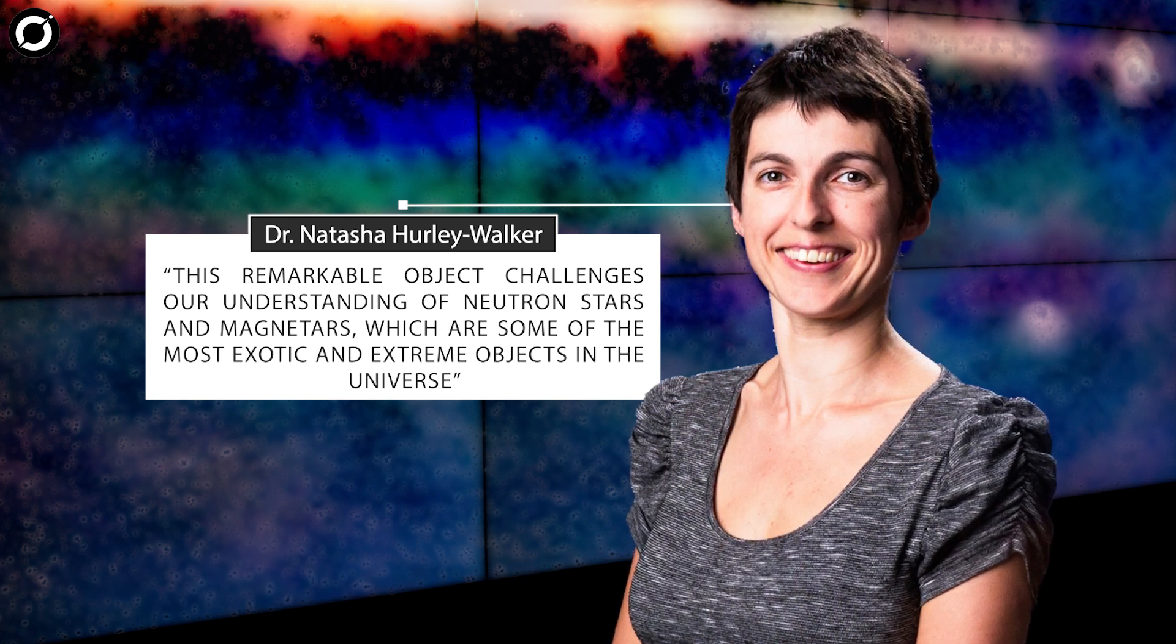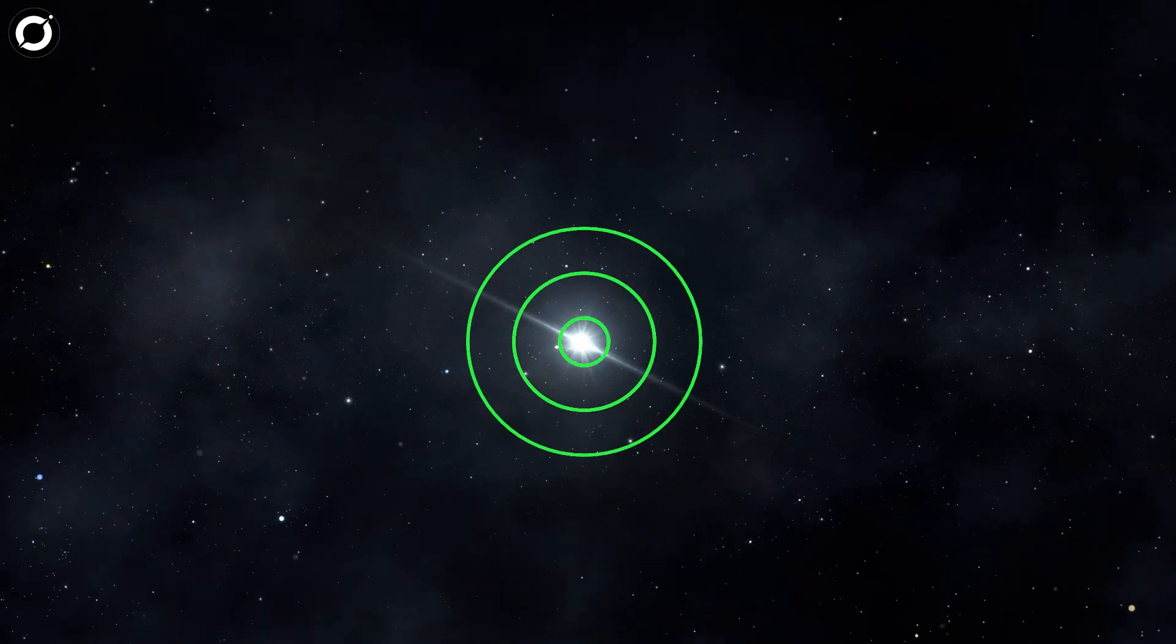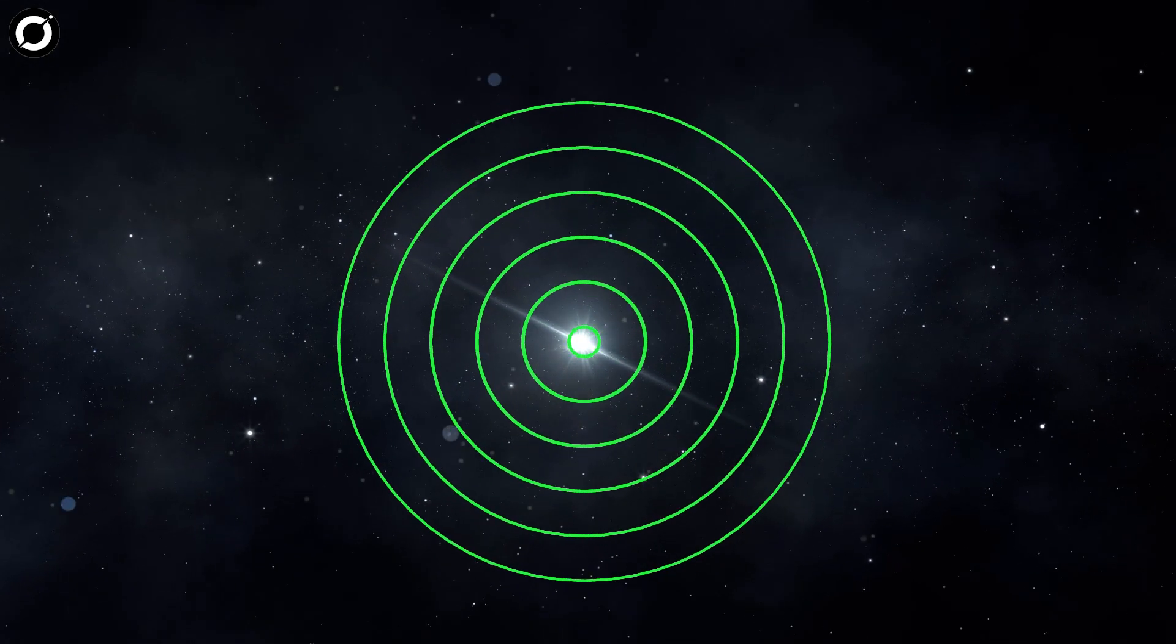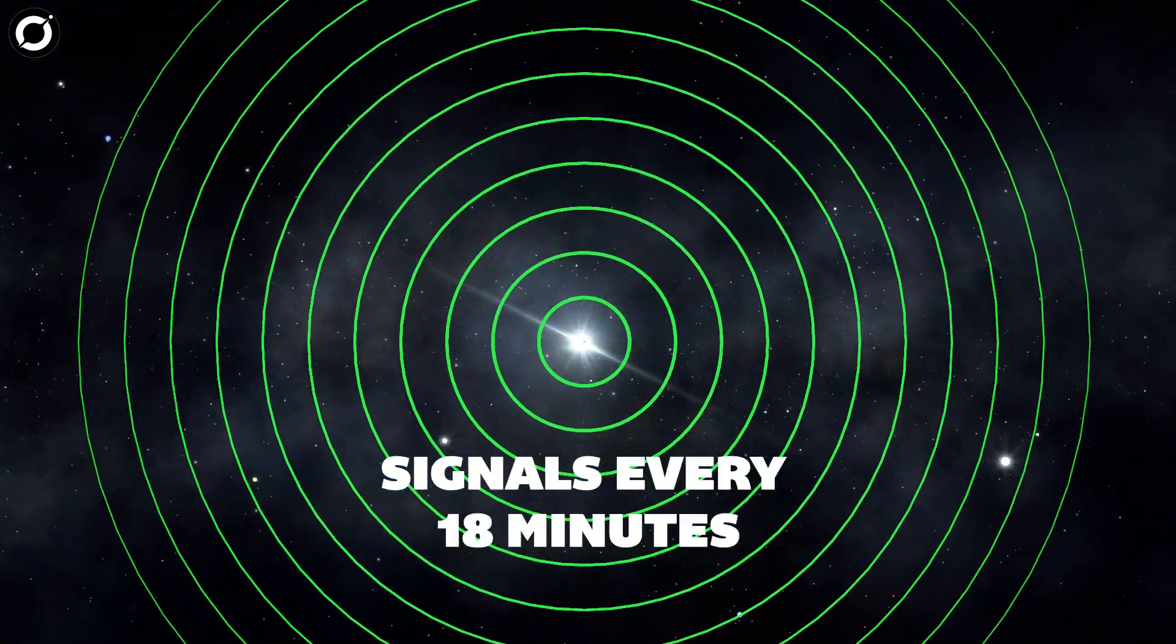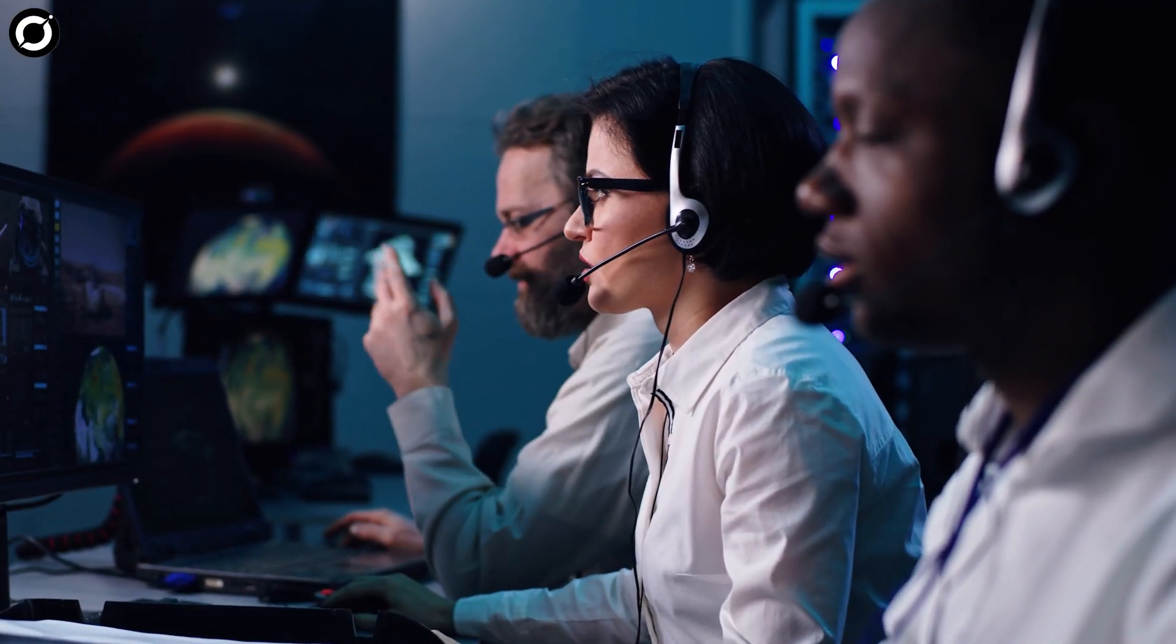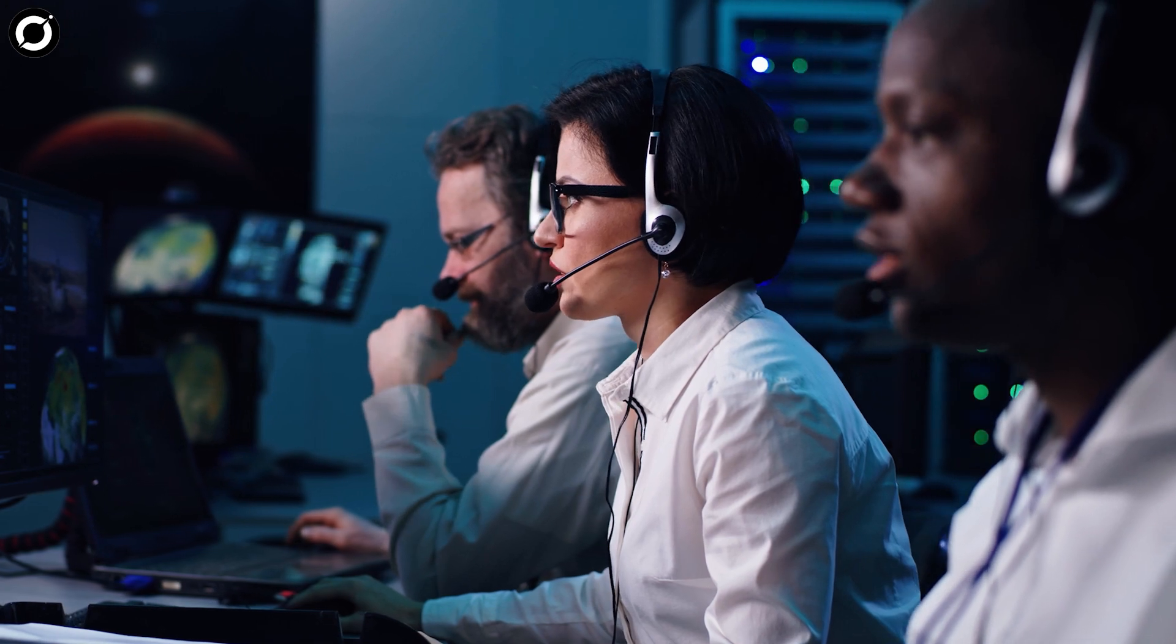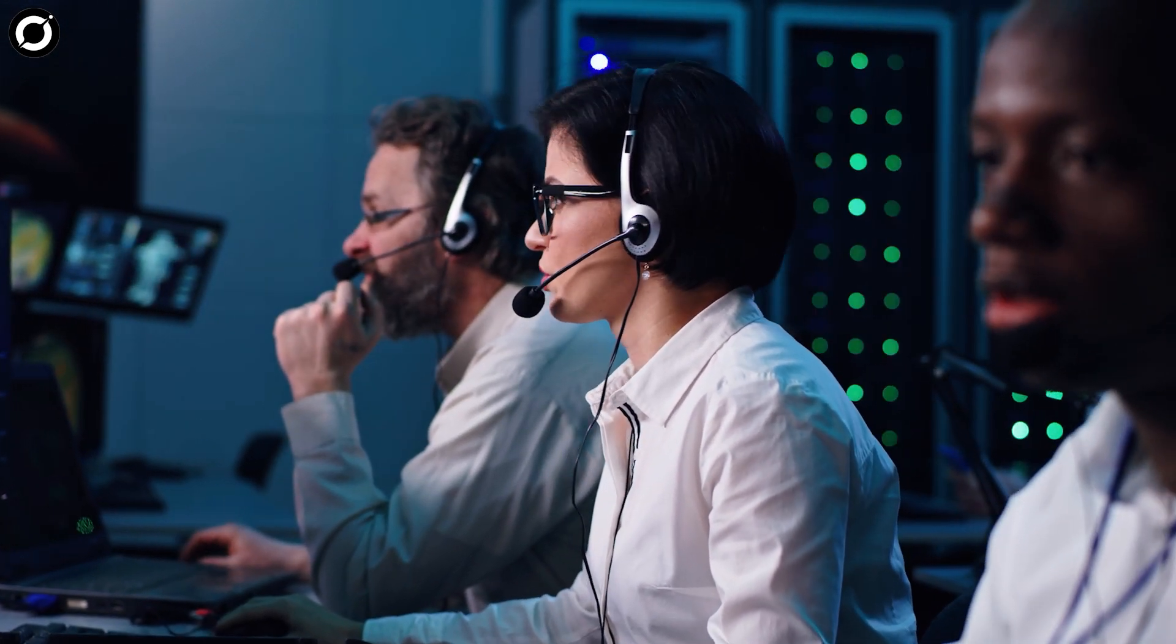Using data gathered in 2018, astronomers first detected another magnetar spinning much slower than usual and sending similar signals every 18 minutes. But by the time they analyzed the data in 2020, it was no longer producing radio waves, according to Hurley-Walker.